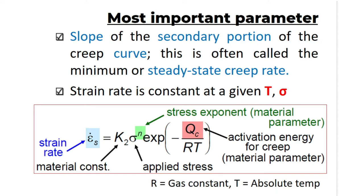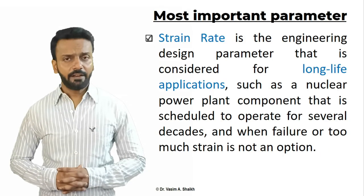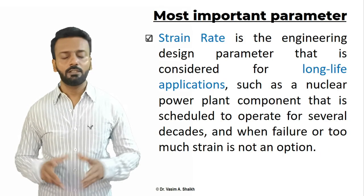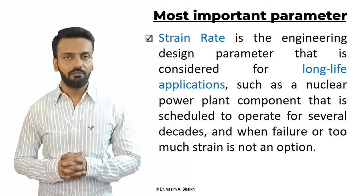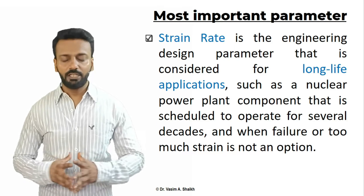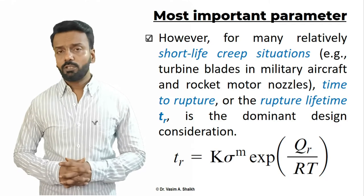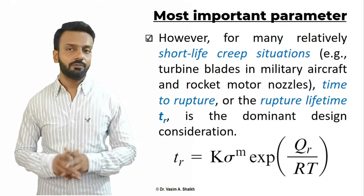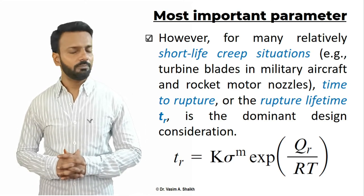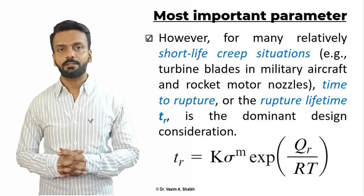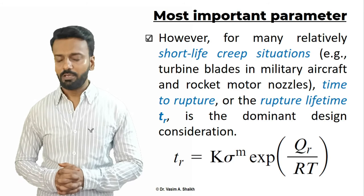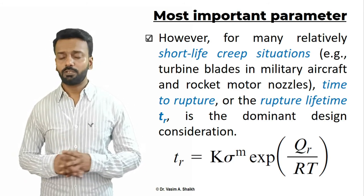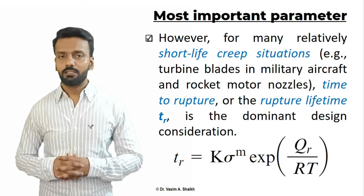Using this strain rate formula, we can predict when a material is bound to fail. Strain rate is the design parameter for long-life applications such as power plants, where the material must last for decades. For shorter-life applications like turbine blades, aircraft, and rocket nozzles, we express failure in terms of rupture time, given by: t_r = K · σ⁻ᵐ · exp(Q/RT), where K and m are material constants and Q is the activation energy.